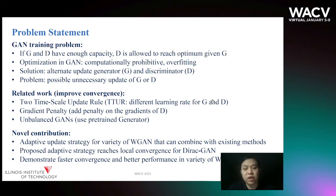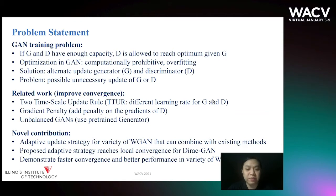There are some related works to solve this problem. TTUR tried to set up different learning rates for G and D, with a gradient penalty on the squared norm of the gradients of the discriminator. Unbalanced GAN pre-trains the generator first and then trains the entire GAN model. However, they still alternatively update G and D. We are the first to focus on adaptively updating G and D in order to reduce redundant updates. In this paper, we propose an adaptive update strategy for a variety of WGANs that can combine with existing methods.